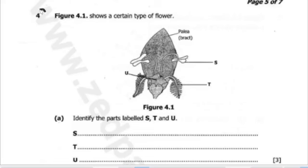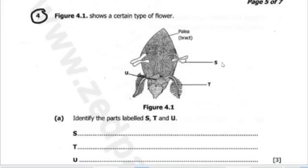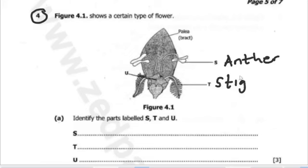Figure 4.1 shows a certain type of flower. This is figure 4.1 showing a certain type of flower that is labeled S, T, and U. So we have our question A right here: Identify parts labeled S, T, and U. The part labeled T is the stigma, and the part labeled U is the ovary.